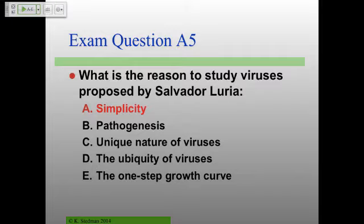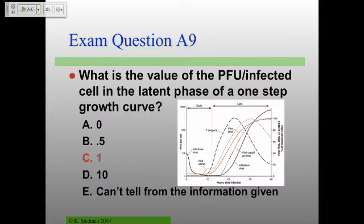The main reason to study viruses, as proposed by Salvador Luria, was simplicity — viruses are wonderful model systems to understand basically everything. That wasn't as critical. A much more important question is: what's the value of PFU per infected cell in the latent phase of a one-step growth curve? And the answer is one. Here's an example of many of those one-step growth curves.